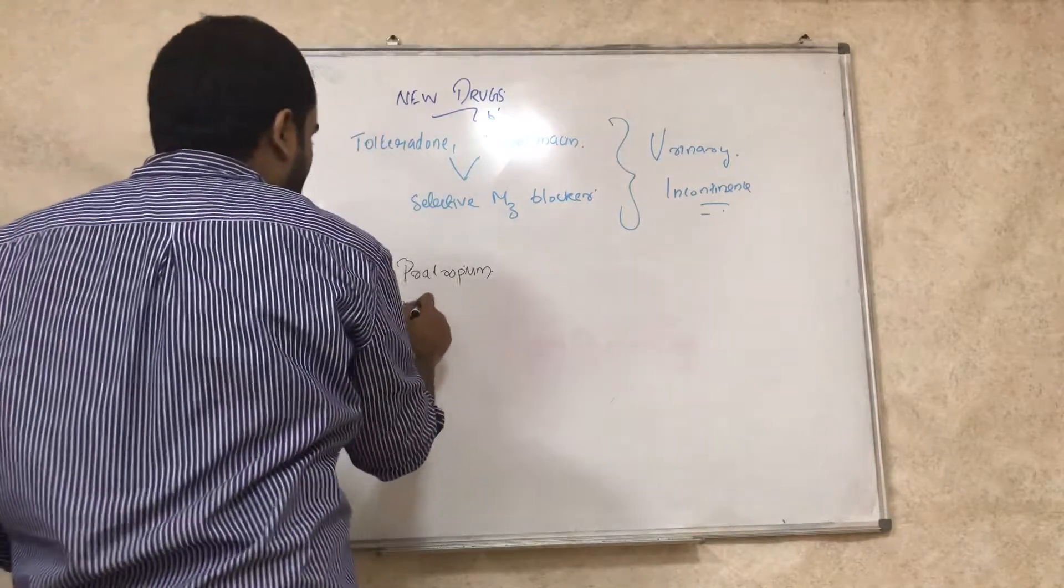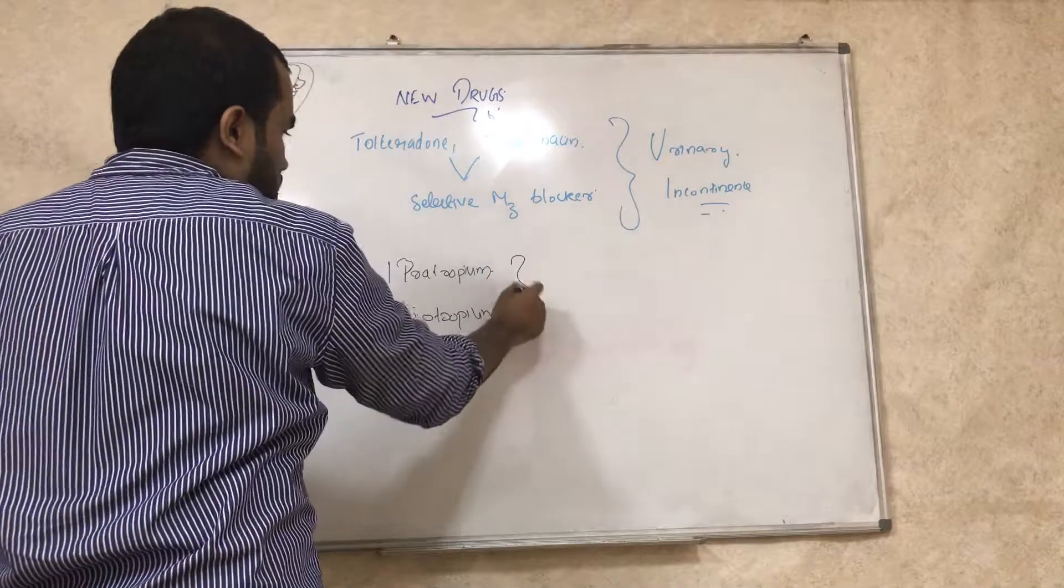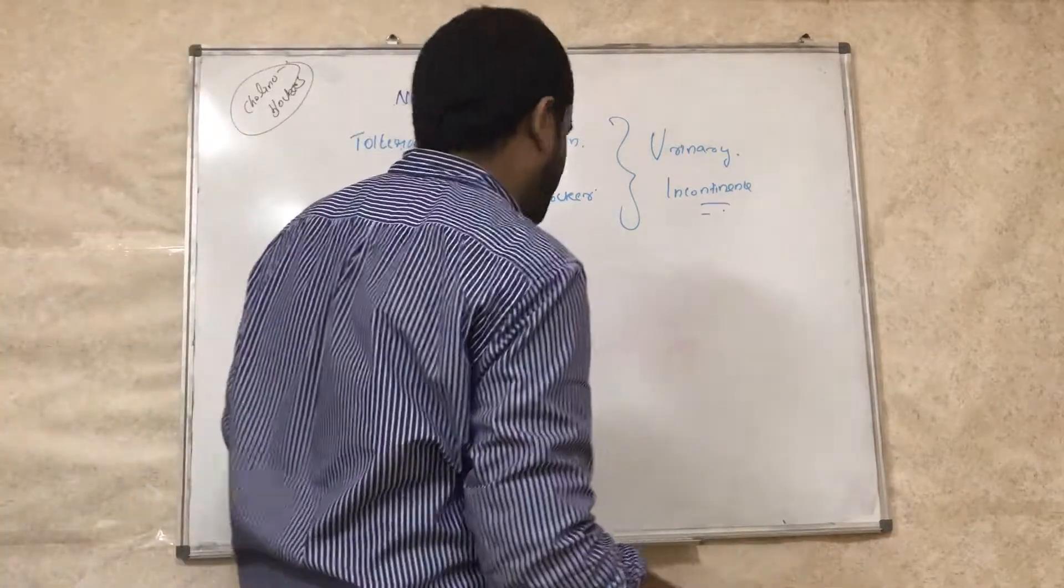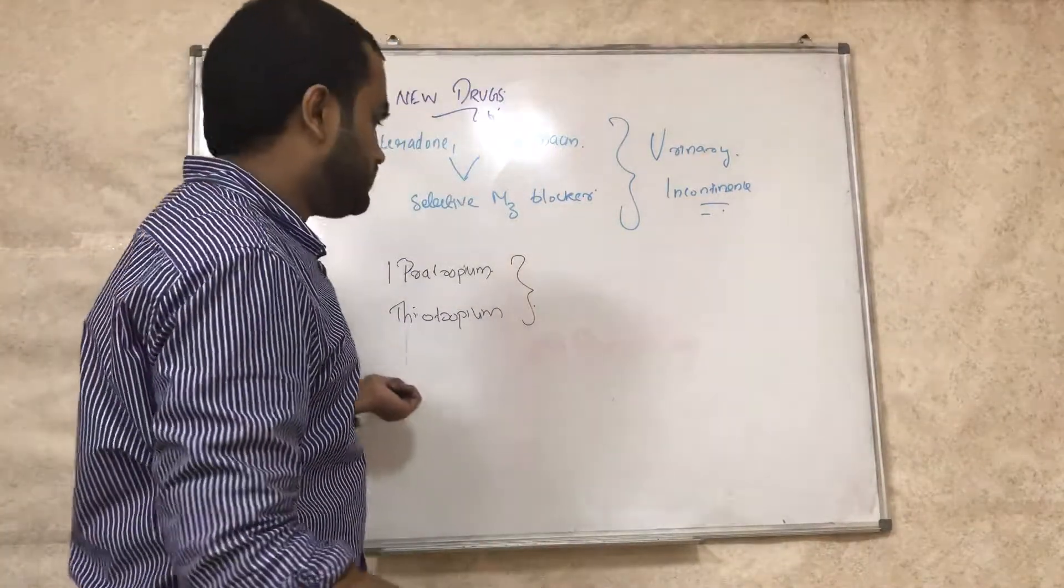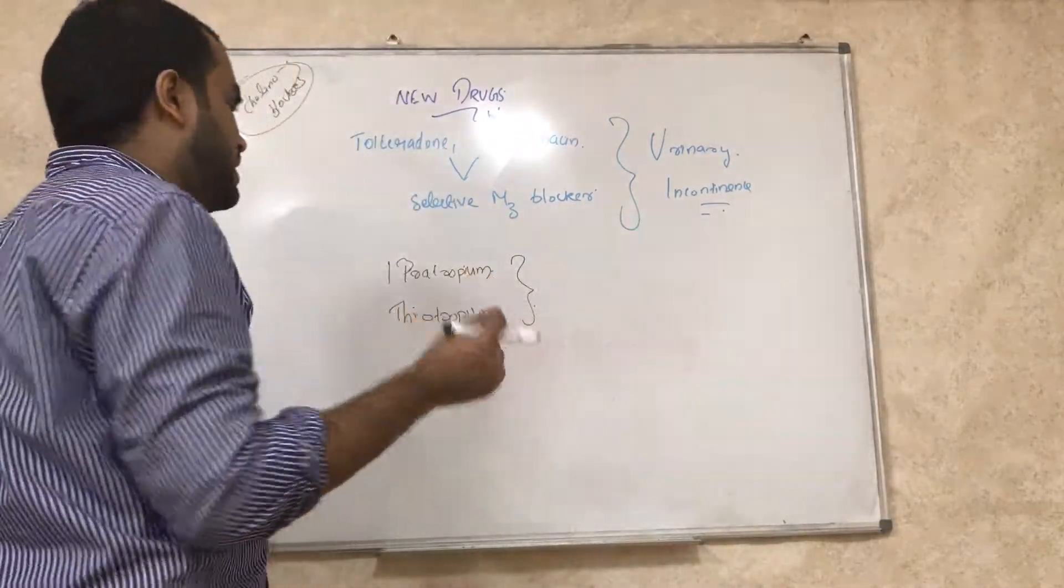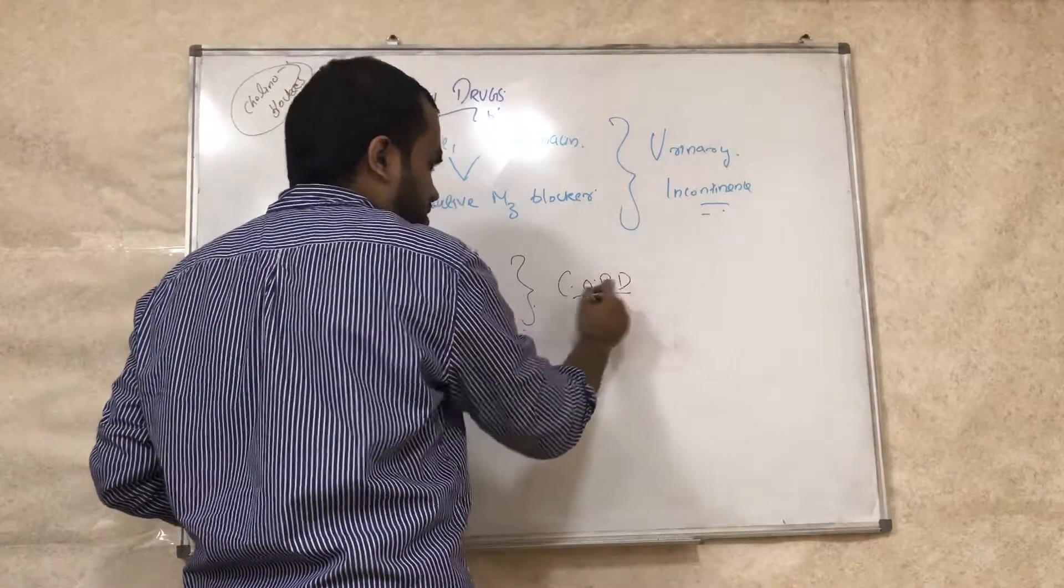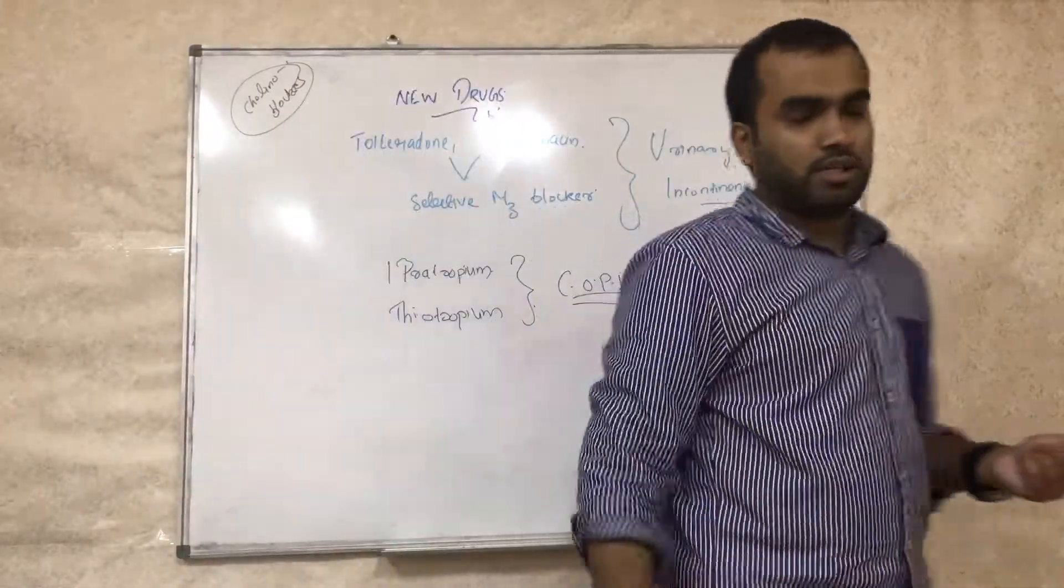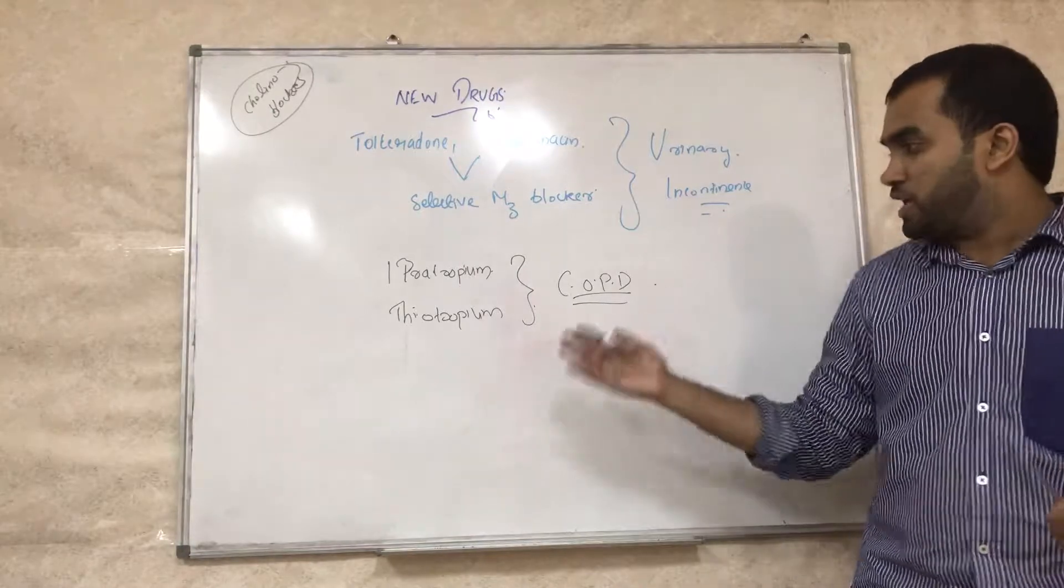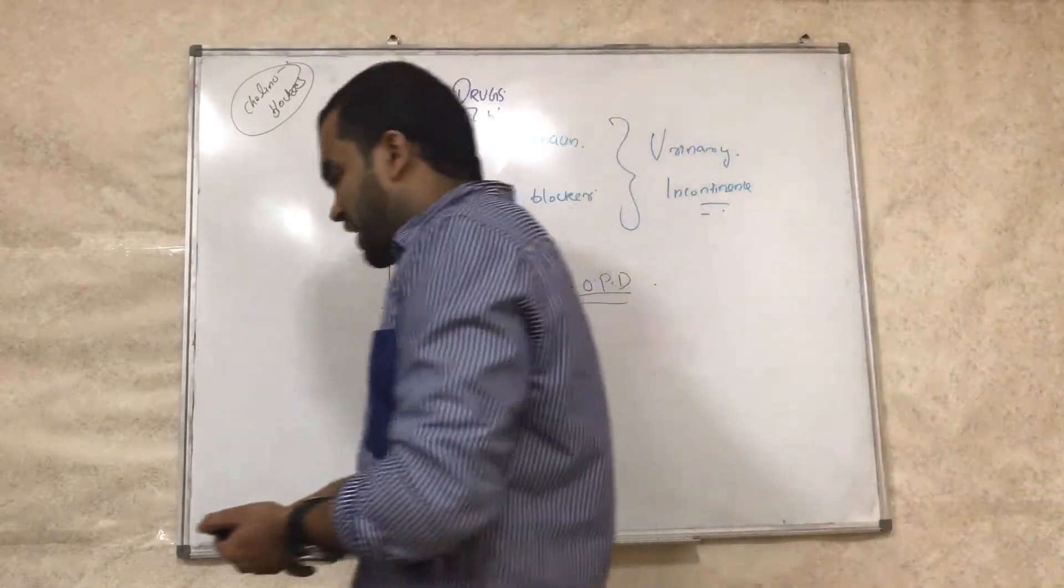Ipratropium is a good M3 blocker or M2 blocker - they are mainly on M3 in the bronchi. You remember tiotropium. So they are used for COPD - chronic obstructive pulmonary diseases. In the lung diseases we can use ipratropium and tiotropium. Clear?